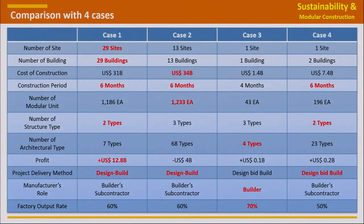Comparing the four cases, look at the construction period. Regardless of the number of buildings and modular units, the construction period is within six months according to the manufacturing of the modular unit. This is a key factor demonstrating the advantage of modular construction.